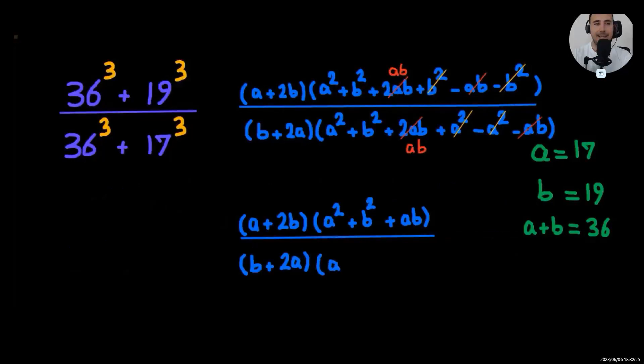And that's the moment of magic I would call, because a squared plus b squared plus ab will be cancelled. So all of this is going to be (a+2b) over (b+2a). Let's plug in the values.